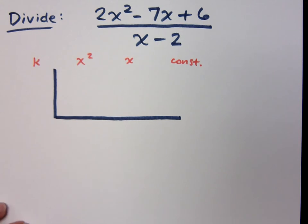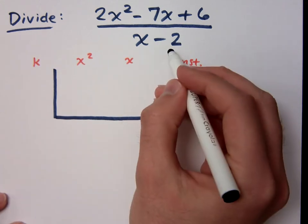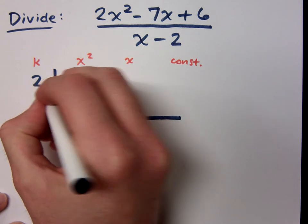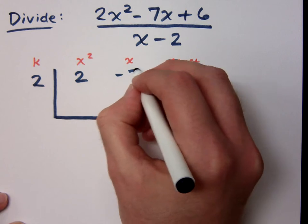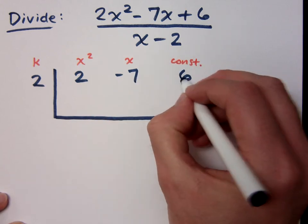What is your k value here? 2. So you see a minus 2, so your k is a positive 2. What's the coefficient for x squared? 2. x? Negative 7, and the constant is 6.